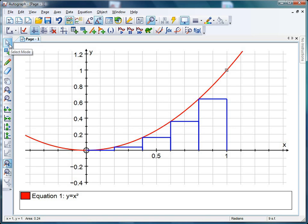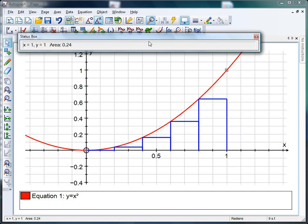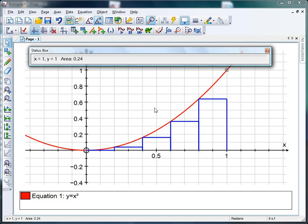Now we can see what Autograph's done there. It's taken rectangles with bases I think of 0.2 and used that as an estimate of the area. We can say to the students, is that a good estimate? Is it an underestimate, an overestimate? How could we improve our estimate?